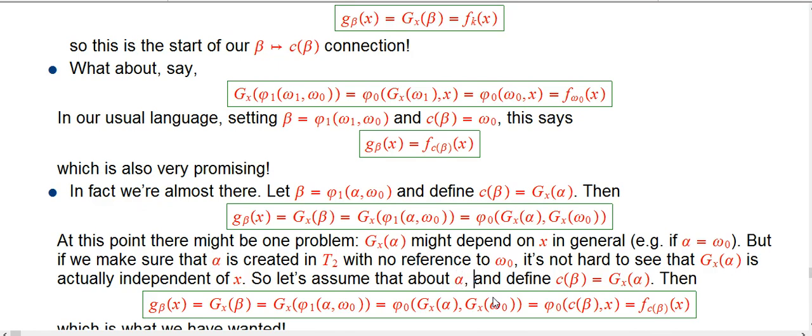So let's assume that from now on about the control argument alpha. And once again, we just define c of beta to be gx of alpha, just like I said. That turns out to be just an ordinal that is independent of x.